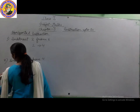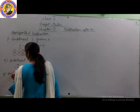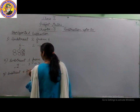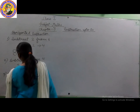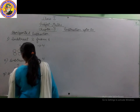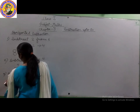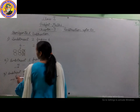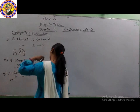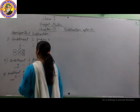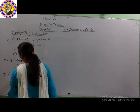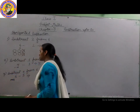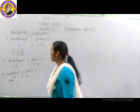Next example: subtract 5 from 6. So 6 minus 5. We draw 6 lines — 1, 2, 3, 4, 5, 6. We subtract 5, so we cross out 1, 2, 3, 4, 5. When we subtract 5 from 6, our answer is 1.